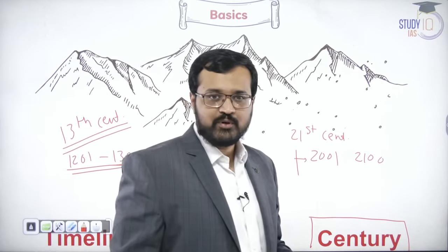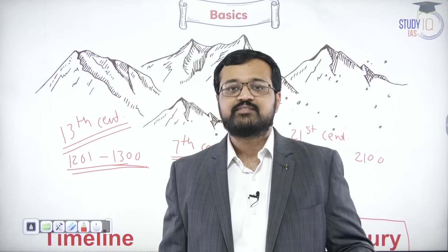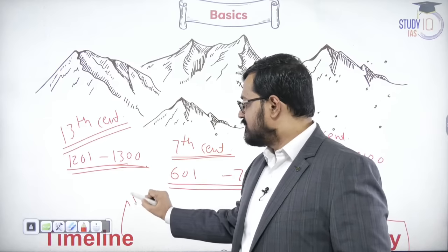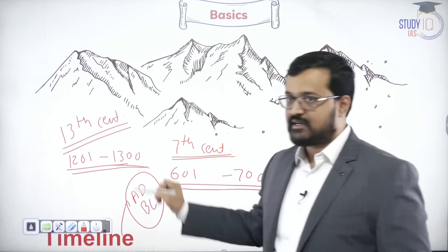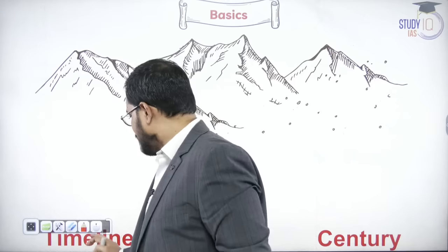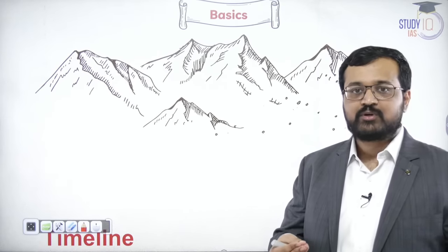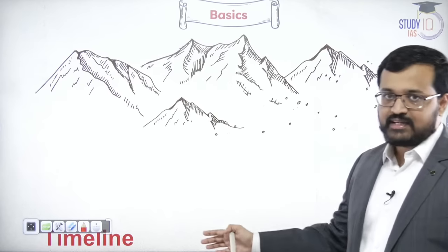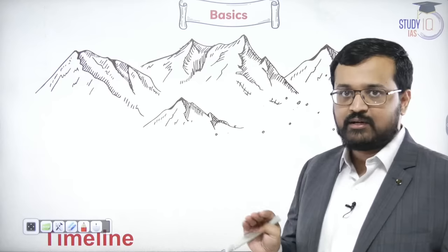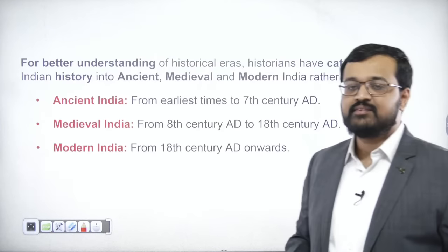Century is quite important because it generally suggests a particular pack of 100 years and what developments happened in those 100 years. I hope it is quite clear what AD and BC are, and what the meaning of a century is. So in the timeline, both the Shaka calendar and the Gregorian calendar are important. These two things are somewhat important, and after understanding century, we then move to the concept of ancient, medieval, and modern India and the basic difference among them.